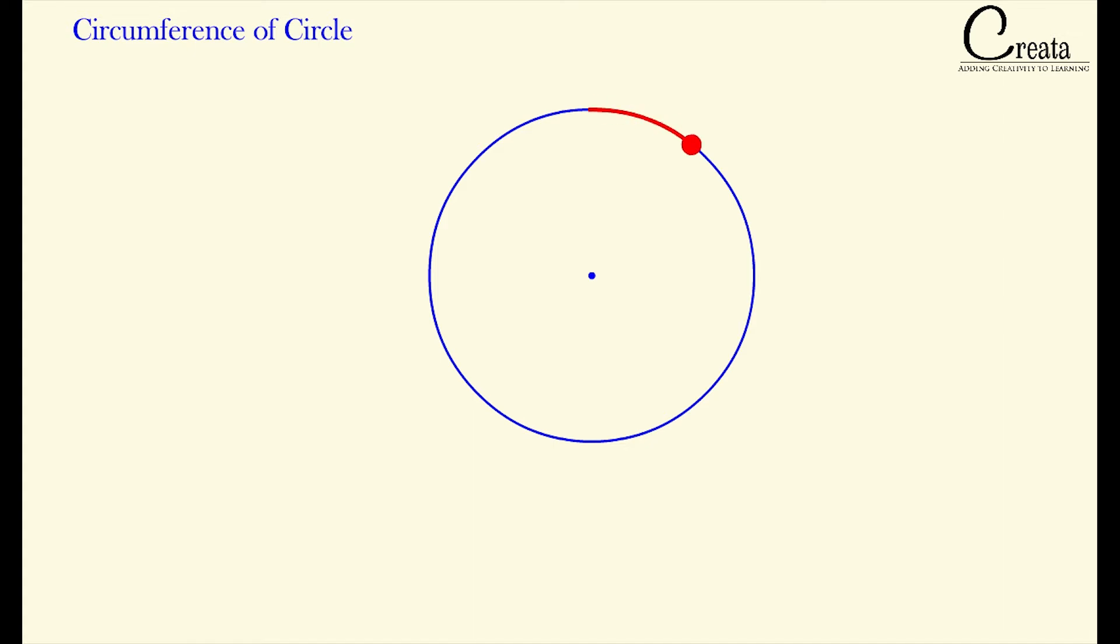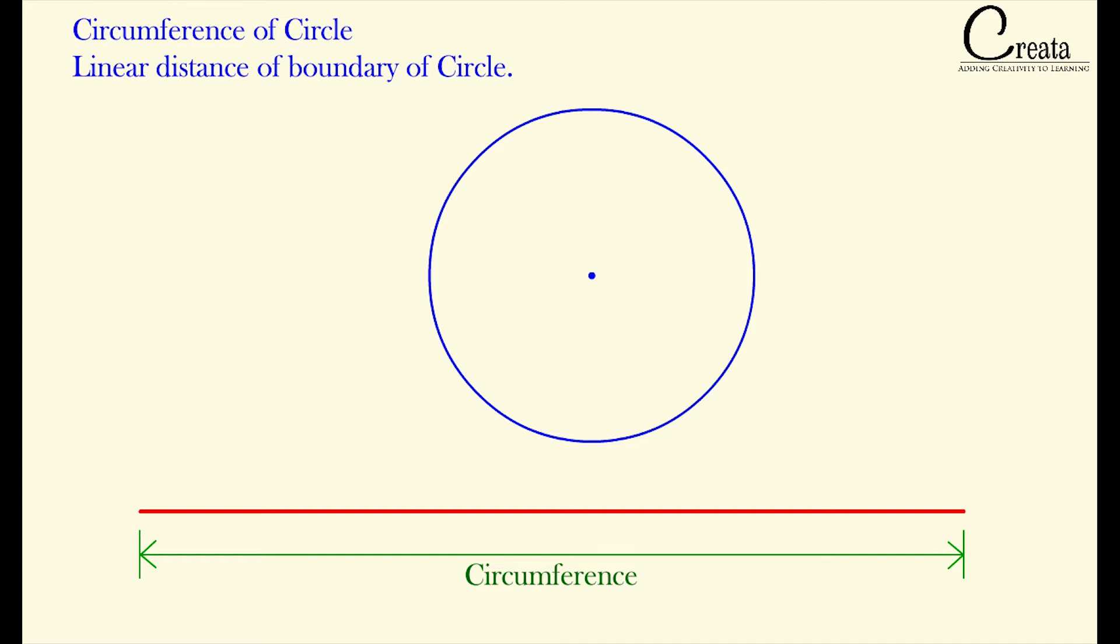Circumference is the total length of the boundary of the circle. This is similar to the concept of perimeter. In the circle, the linear distance of the boundary is known as circumference.